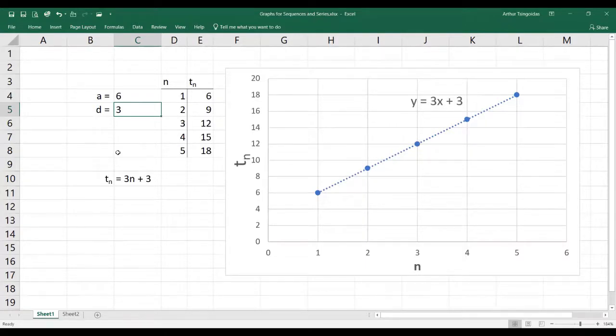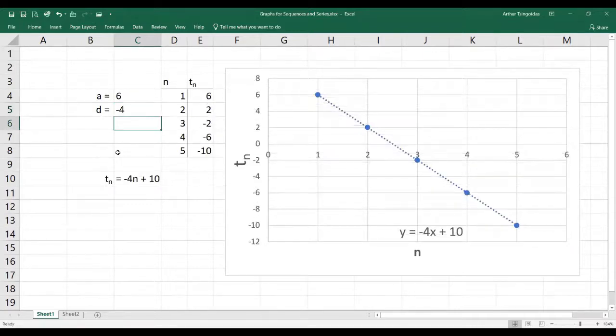But now I'm going to make this into a minus 4. So I'm changing d. It's going from what it was previously, 3, to minus 4. And now that d is negative, the gradient of that line has become negative. So when your value of d is negative and you graph the terms of your arithmetic sequence, you're going to get a straight line, but the line will have a negative gradient.